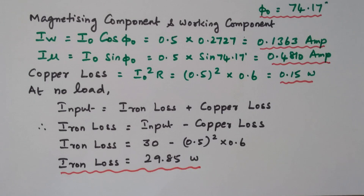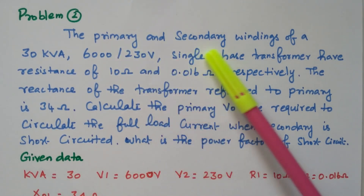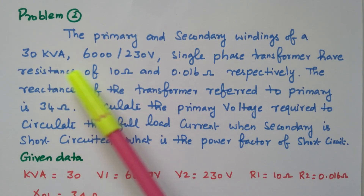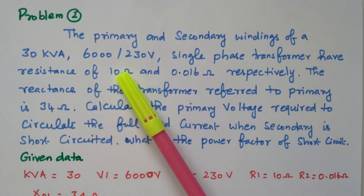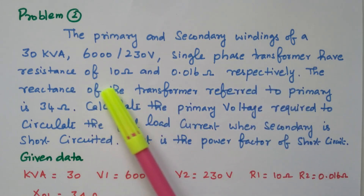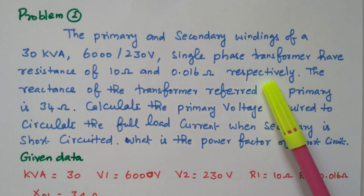So now we have calculated the turns ratio, magnetizing component, working component, and iron loss. Now we will go to the second problem. The primary and secondary windings of a 30 kVA, 6000/230 volt, single phase transformer have resistance of 10 ohm and 0.016 ohm respectively.